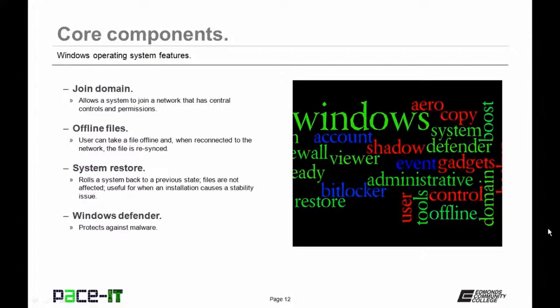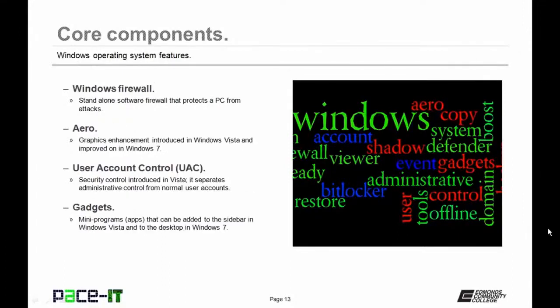Then there's Windows Defender, which protects the user against malware. Then there's Windows Firewall — a standalone software firewall that protects a PC from virus attacks. Then there's Aero, a graphic enhancement introduced in Windows Vista and improved upon in Windows 7.